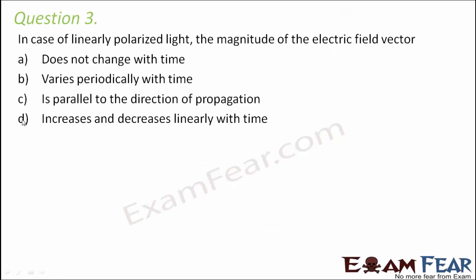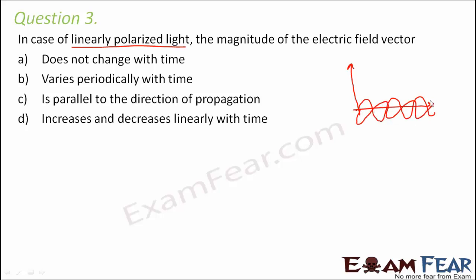Question number 3. In case of linearly polarized light, what is the magnitude of the electric field vector? First, let's understand what linearly polarized light is. Linearly polarized light is always in the form of an electromagnetic wave. In an electromagnetic wave, the electric field vector is not constant — the electric field and magnetic field continuously change with time, and they are perpendicular to each other. The electric field changes periodically with time, so the correct option is B.